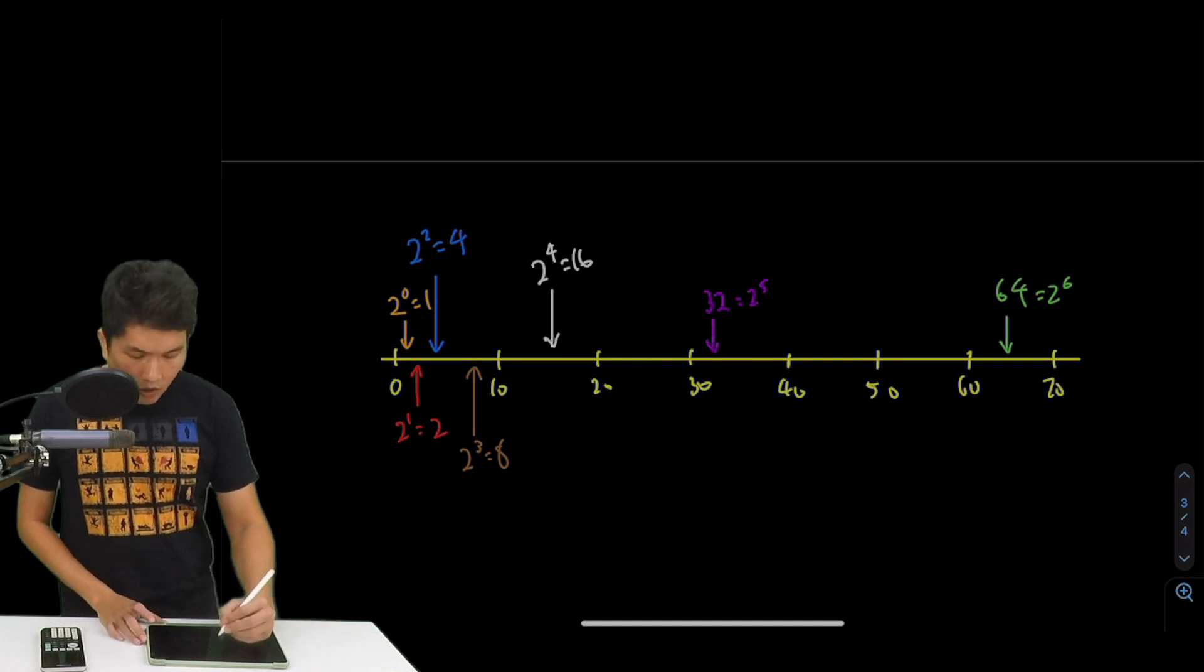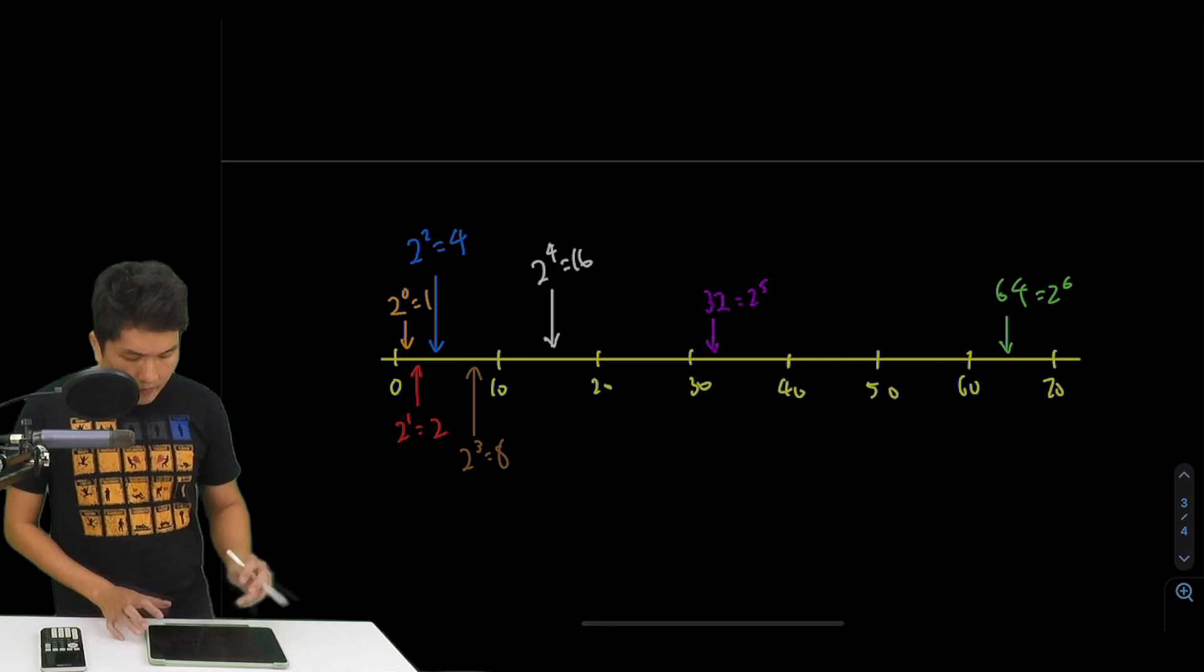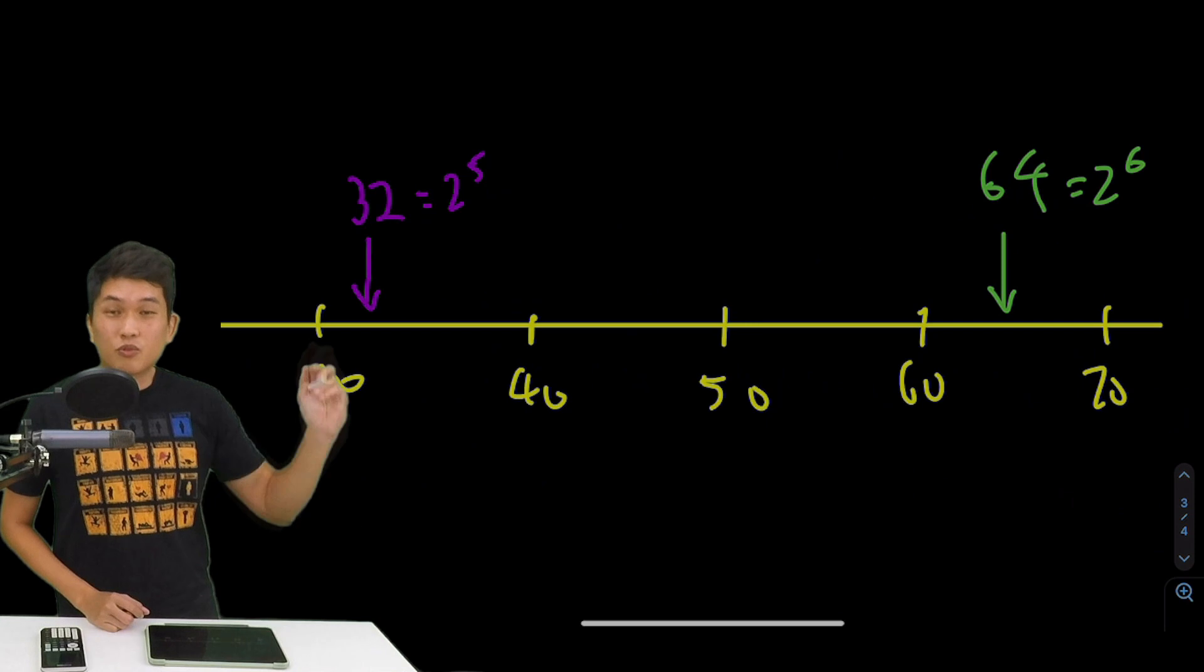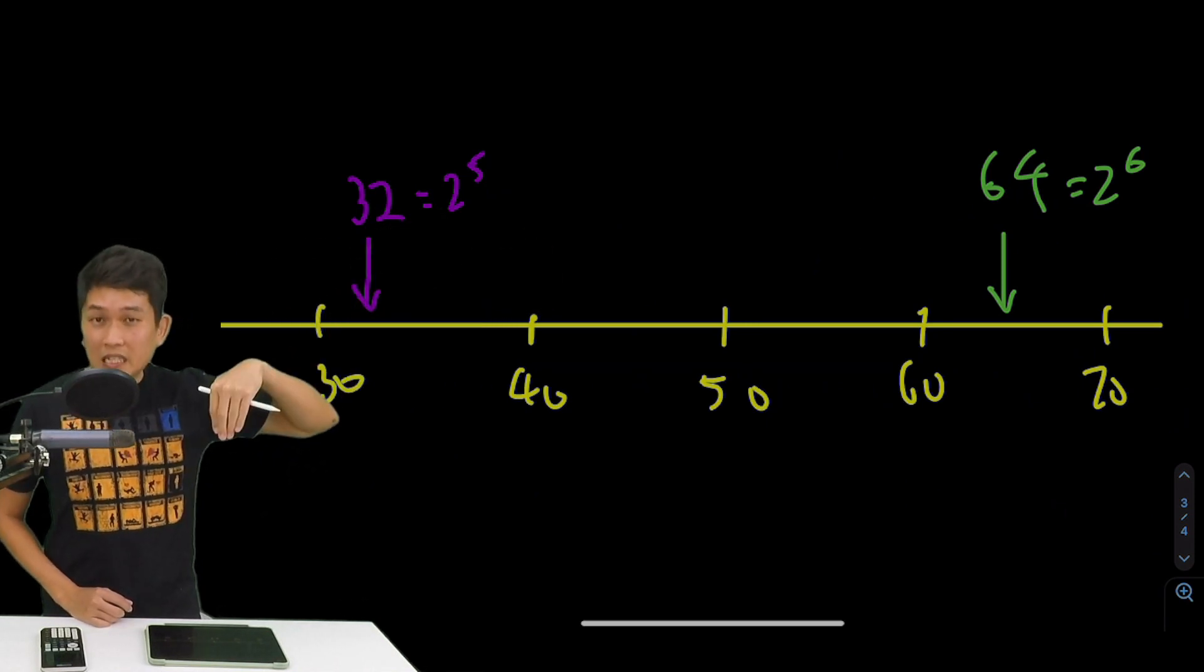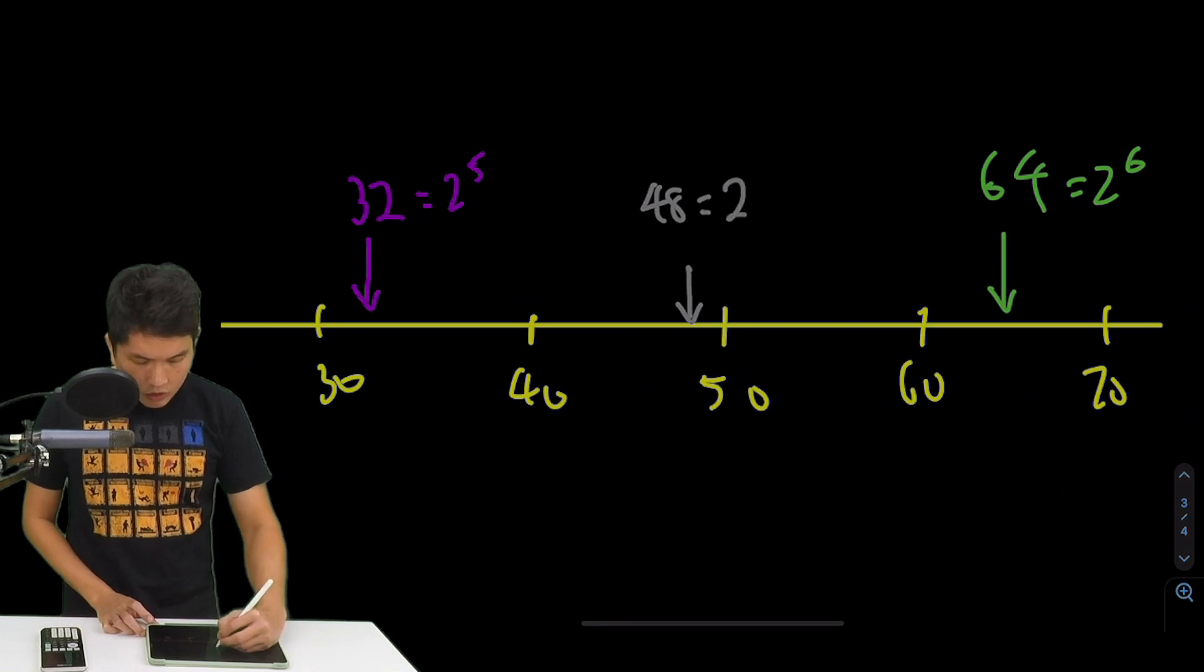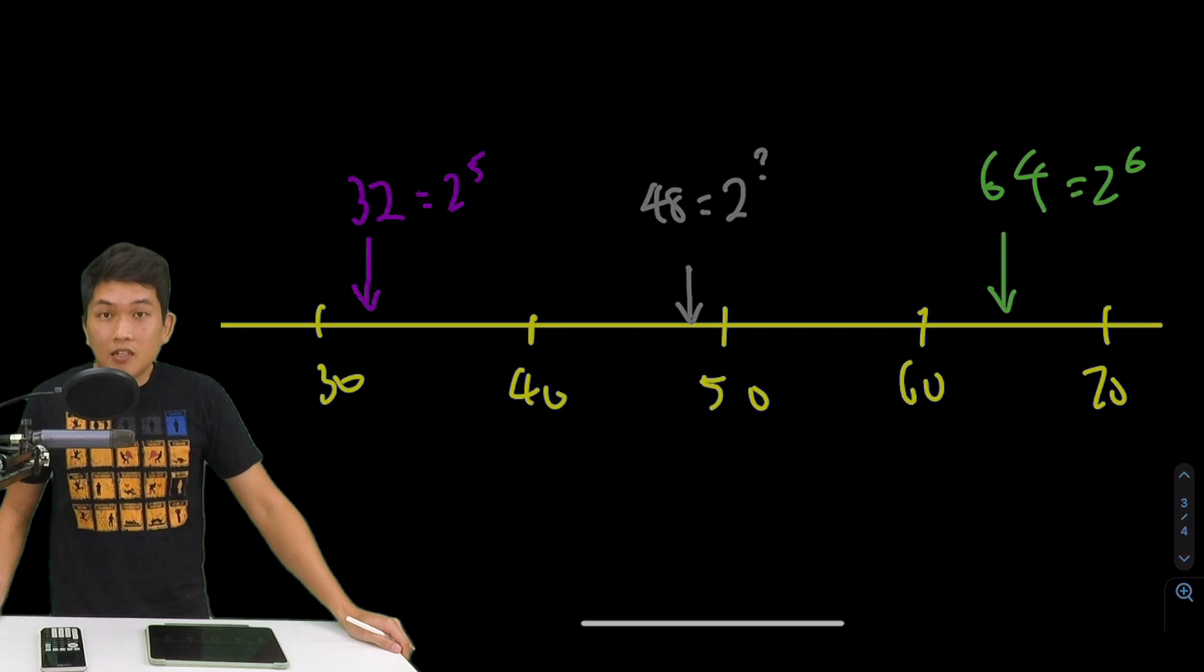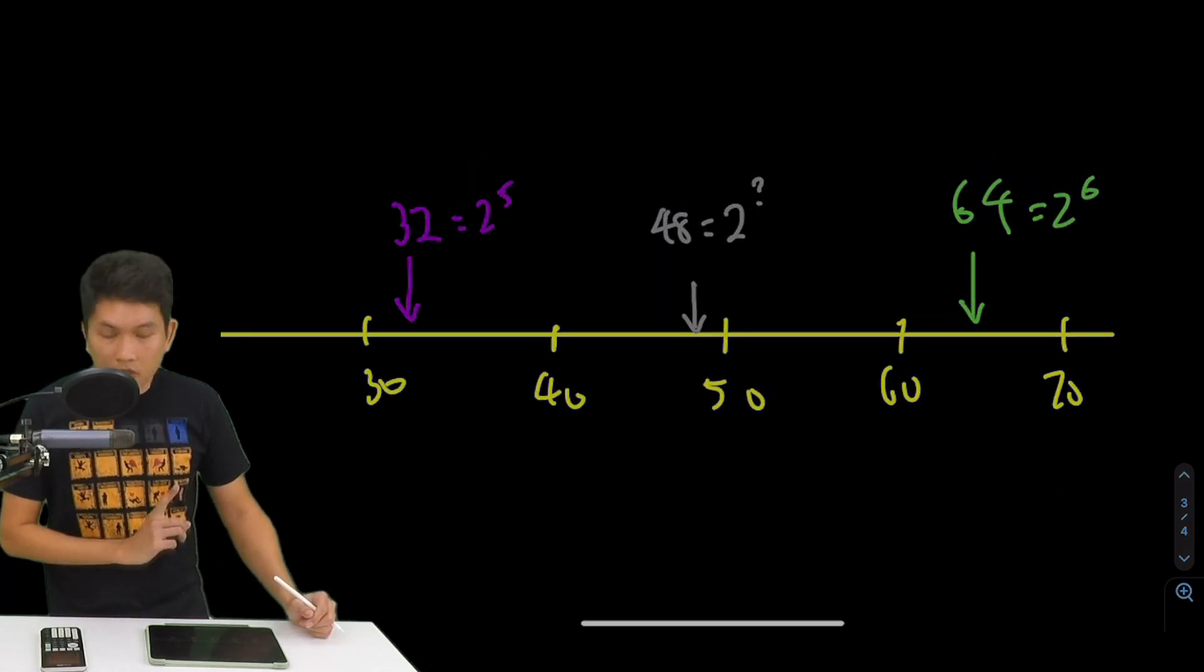So like I said, what logarithms is designed to answer is this. If I'm looking at 32 and 64, look at the gap between 32 and 64. One is 2 to the power of 5, one is 2 to the power of 6. What if I want something in the middle like 48? Then 48 is 2 to the power of what? That is basically logarithms.